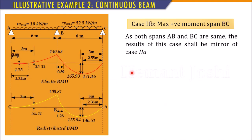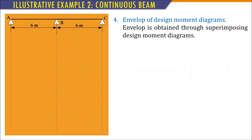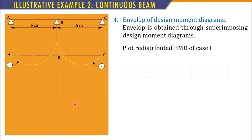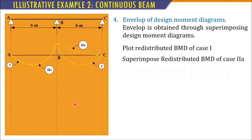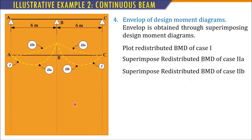Case 2B — maximum positive moment in span BC — is the mirror image of Case 2A since both spans are equal with symmetric loading interchange. The elastic BMD and redistributed BMD are simply mirror images of Case 2A results. Diagrams are plotted accordingly.